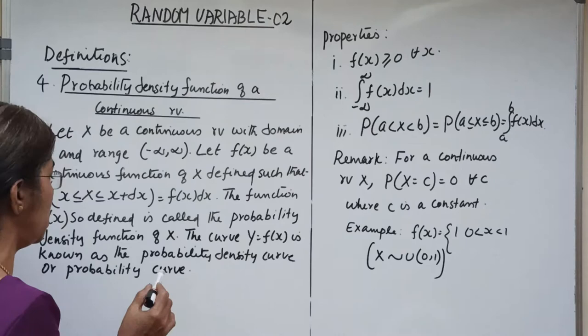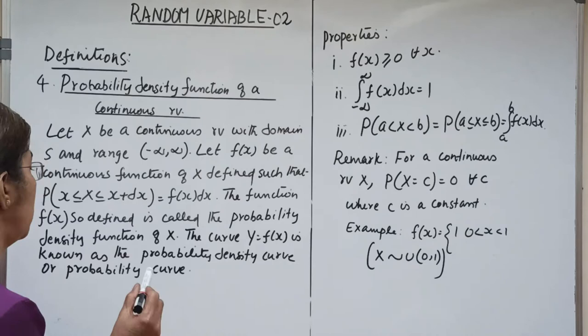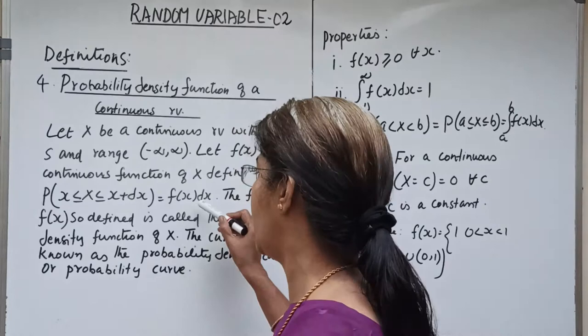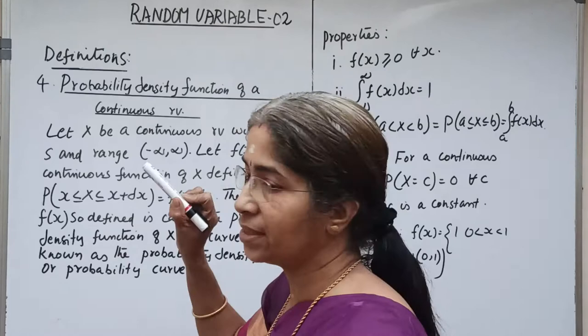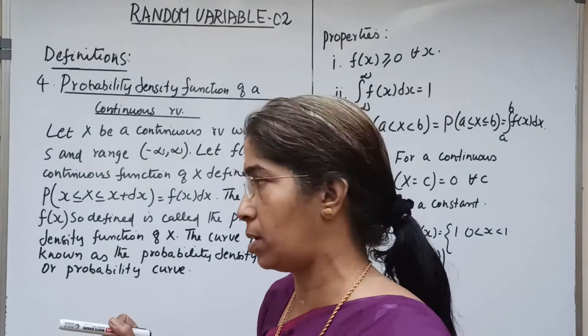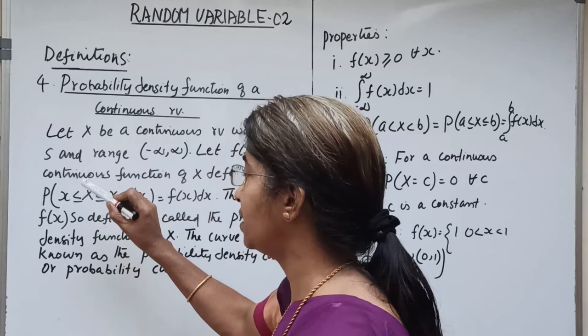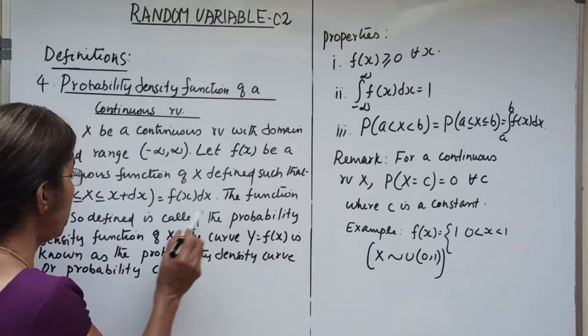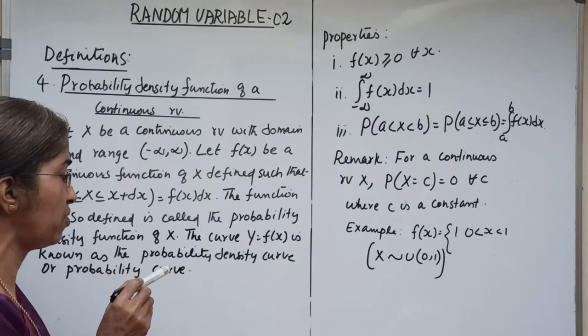The function f(x) dx is defined such that the probability in a small interval in the neighborhood of x — that is, in the interval x to x plus dx — gives the probability of the random variable X lying in that interval. The probability that the random variable X lies in the interval x to x plus dx is the function f(x) dx, which is called the probability differential.